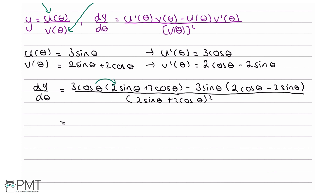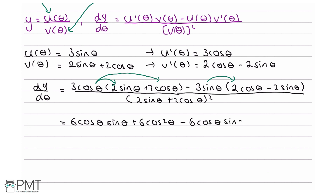Let's start expanding. 3 cosine theta times 2 sine theta gives 6 cosine theta sine theta. 3 cosine theta times 2 cosine theta gives 6 cosine squared theta. Then minus 3 sine theta times 2 cosine theta gives minus 6 cosine theta sine theta. And minus 3 sine theta times minus 2 sine theta gives positive 6 sine squared theta.